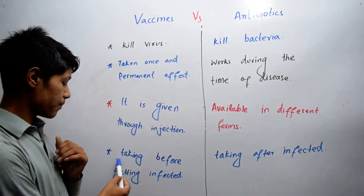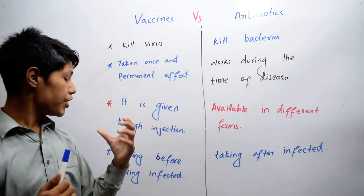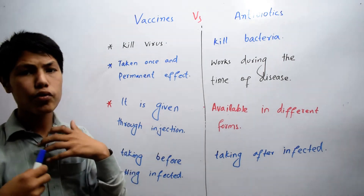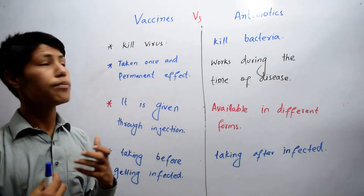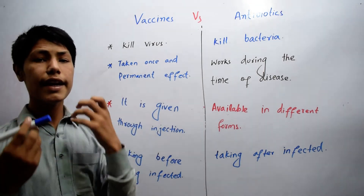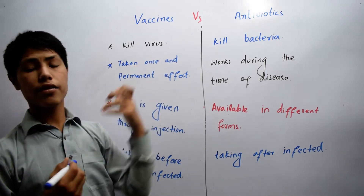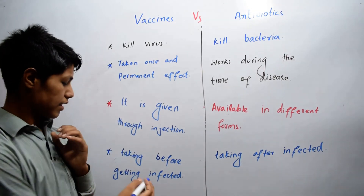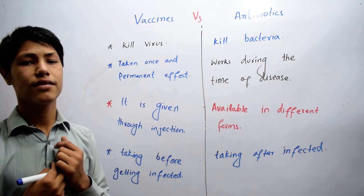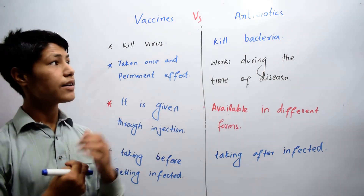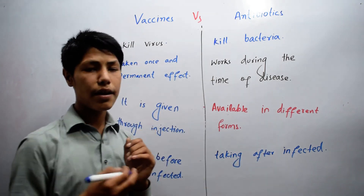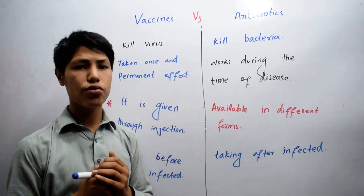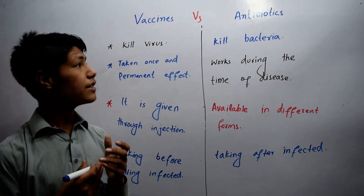The last difference is that vaccines are taken before getting infected. When you are not infected by some virus, vaccines help us. Vaccines help to strengthen the immune system so that when any virus enters our body, it fights against those viruses. This vaccine is used for precaution. While on the other hand, antibiotics are taken after being infected. When you are infected by a disease caused by bacteria, antibiotics are used. So this was all about vaccines and antibiotics.